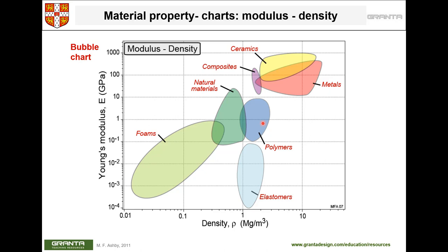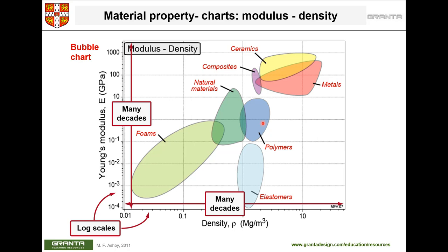Plotting one property against another — looking at two properties simultaneously — is very helpful. Here we are interested in both modulus and density. Because we are dealing with a wide range of materials, we again use a logarithmic scale.